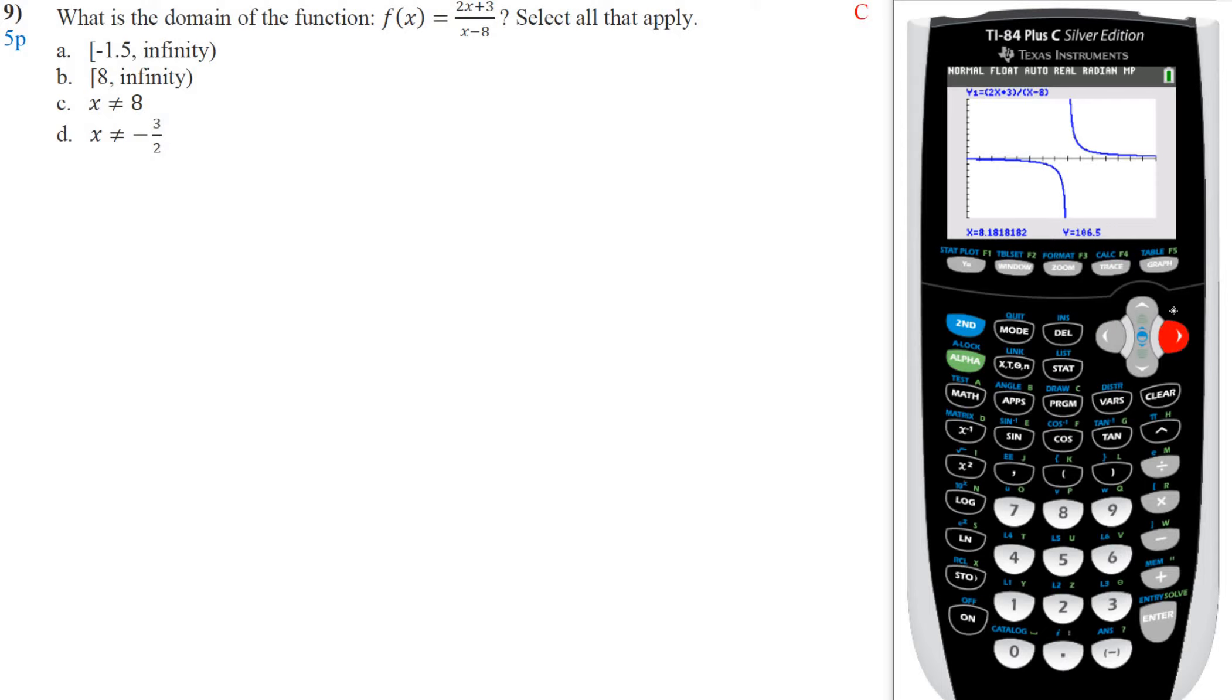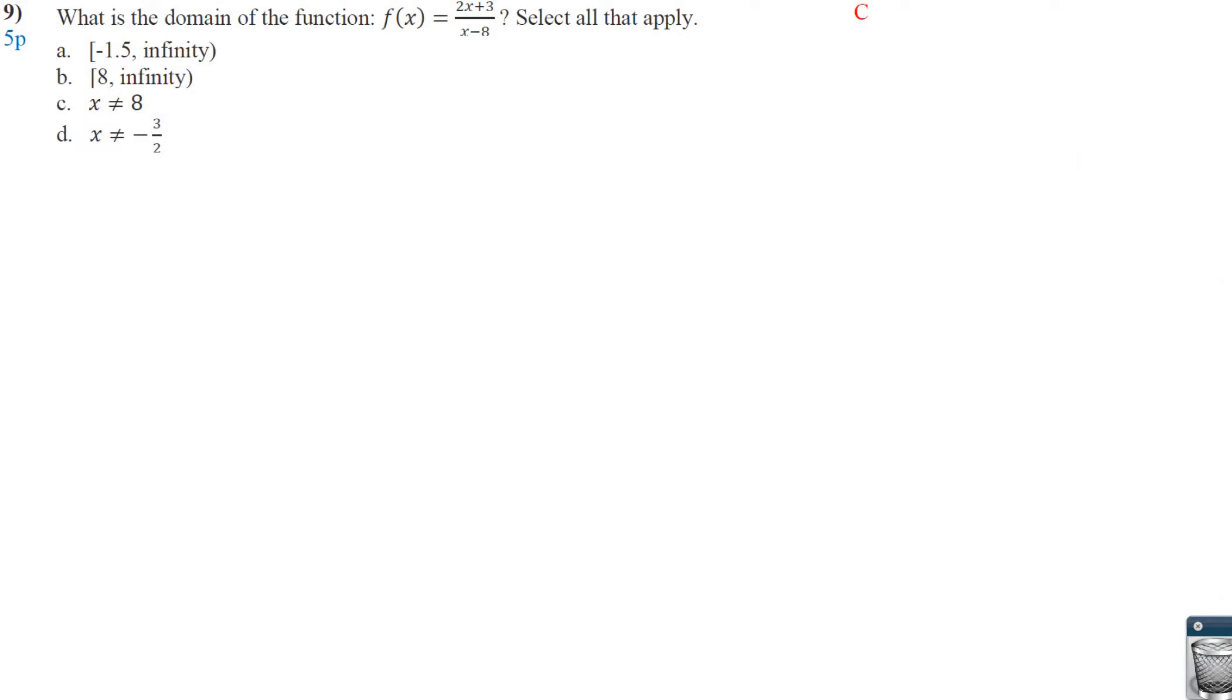Which makes sense. Because if we think about it, we have a restriction. Right? We can't divide by 0. So that means x minus 8 can't be 0. So x can't be 8. There's your restriction.